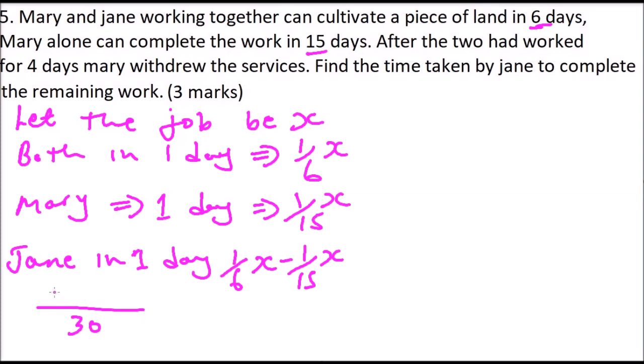So this is 30 divided by 6 is 5. 5 times 1 is 5x, minus 15. 30 divided by 15 is 2 times 1 is 2x. So this means it is 3 over 30x, which equals 1 over 10 of the job. So Jane can do a tenth of the job in one day.